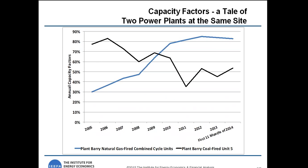This is a tale of two power plants at the same site. The blue line shows a natural gas combined cycle plant at the Barry site in southern Alabama. Over time, the plant has generated more and more power, due in large part to the fact that in 2008 natural gas prices collapsed, making it more economic to operate the combined cycle unit more. The black line shows the generally declining generation from the most efficient coal unit at the same site. As natural gas prices go down, the gas plant displaces the coal plant.